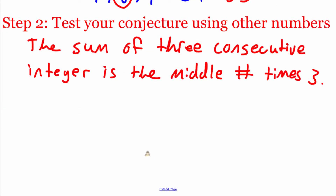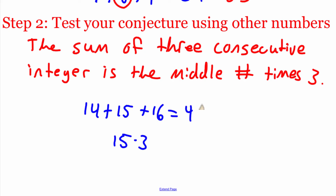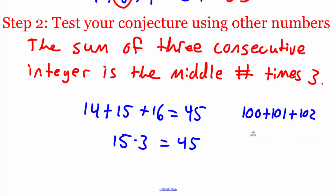Now I want to test that conjecture. Trying 14+15+16: adding gives 45, and 15×3 also gives 45 — it holds. Let's try larger numbers: 100+101+102. Adding gives 303, and using my conjecture, 101×3 also gives 303. The conjecture continues to hold true.